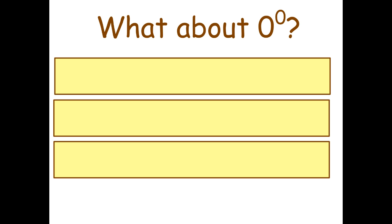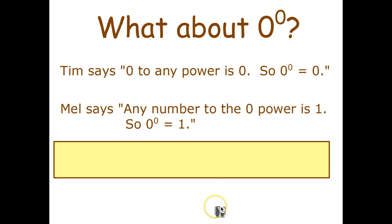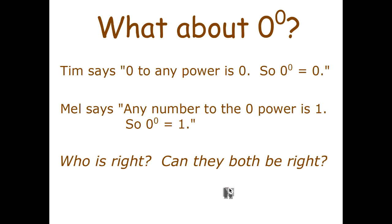Now it turns out that's largely true but there's one exception which is what happens when we raise 0 to the zero power. Well Tim says 0 to any power is 0. Like for example 0 to the power of 3 is 0 times 0 times 0 which is 0. So he says that has to equal 0. Mel says but any number to the zero power is 1. That's what we just learned on the last page. So 0 to the zero must equal 1. So the question is who's correct? Can they both be right? Well it has to be 0 or it has to be 1.